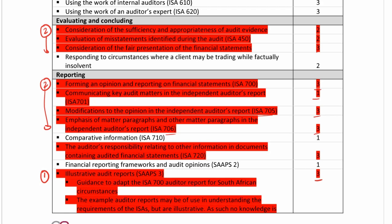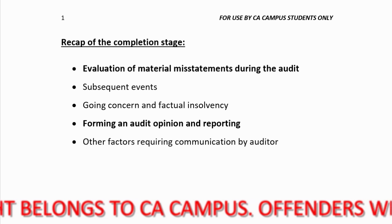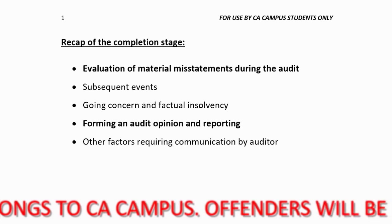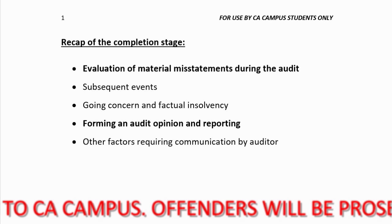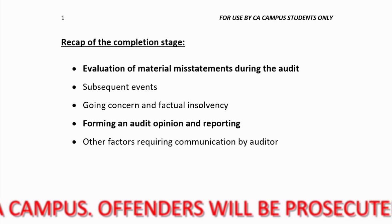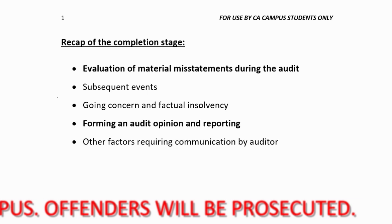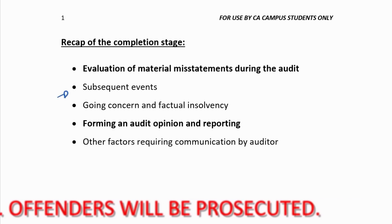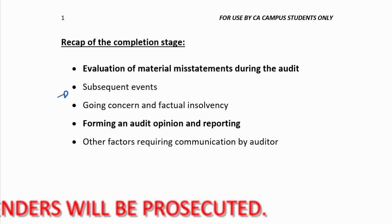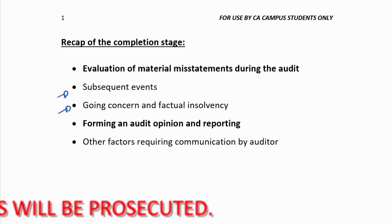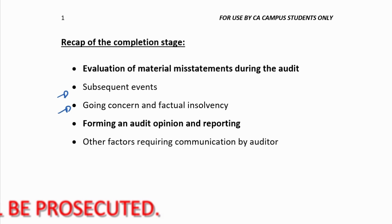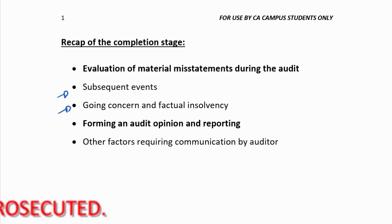Before we jump into the two new sections of completion, let's just recap the whole stage and what we have addressed so far. Last week, we looked at the completion stage as a whole so we could understand how to address the different elements auditors need to cover. We did subsequent events — that was how the auditor evaluates post-reporting-date events — and then we looked at the auditor's consideration regarding whether the entity is a going concern.